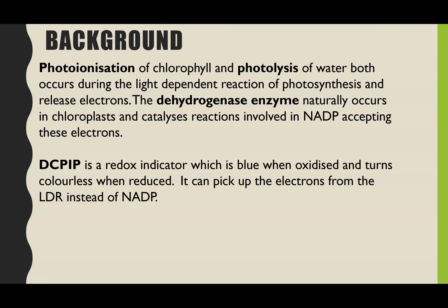The chemical we're going to use to track the release and accepting of electrons is DCPIP, and this is a redox indicator, meaning it changes color depending on whether it is oxidized or reduced. DCPIP is blue when it is oxidized and turns colorless when it is reduced — when it has picked up electrons. What DCPIP is able to do is pick up the electrons released in photoionization and photolysis from the light-dependent reaction instead of the coenzyme NADP.